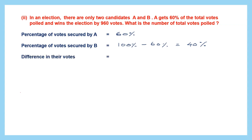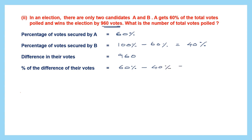The difference in their votes is 960 — that's given because A won by 960. The percentage difference is 60% minus 40%, which is 20%. So 20% of the total votes equals 960. Let the total number of votes be X, so 20% of X is 960.